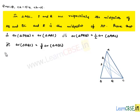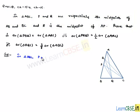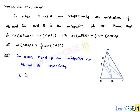Coming to the solution, let us note down the given information: in triangle ABC, P and Q are midpoints of AB and BC respectively, and R is the midpoint of AP. Now let us join AQ, CP, CR, PQ, and RQ.